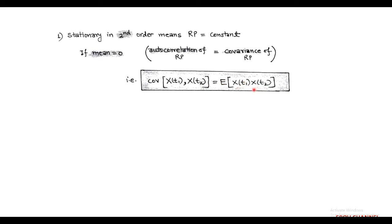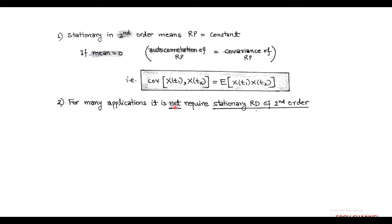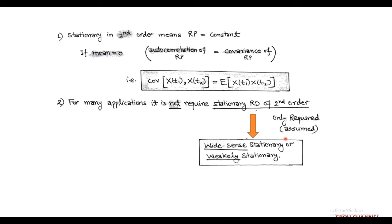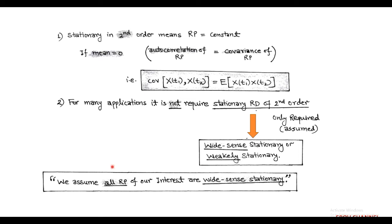Similarly, in many applications there is no requirement for a second-order stationary random process. In that case, it is assumed that the random process is required to be wide-sense stationary or weakly stationary. In general, we assume that all random processes of interest are wide-sense stationary random processes.